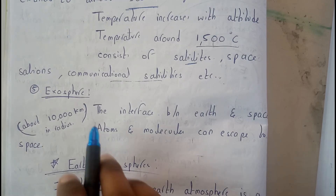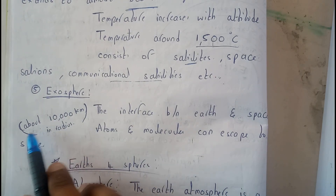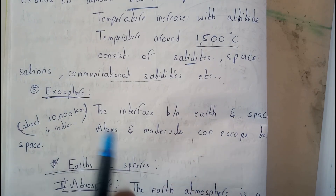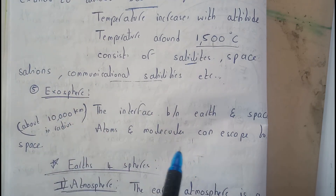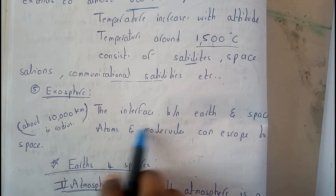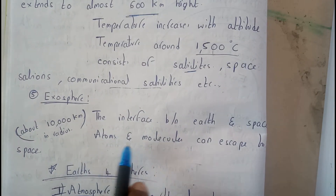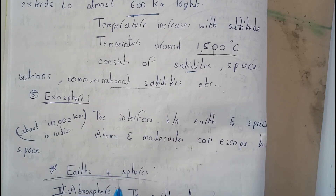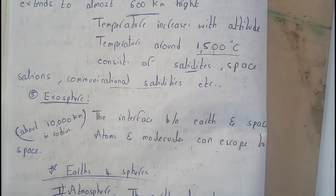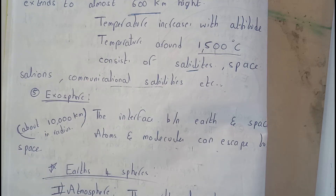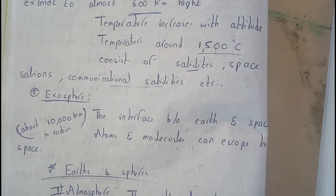The topmost layer is exosphere. It is around 10,000 kilometers in radius. It is the interface between earth and space — atoms and molecules can escape to space here. We also find asteroids and meteors in this region.